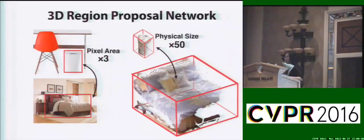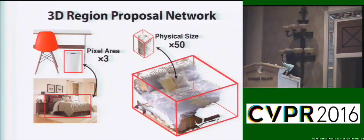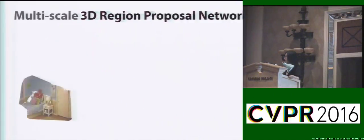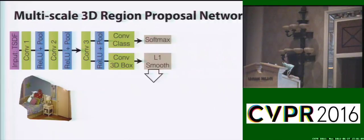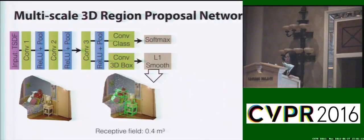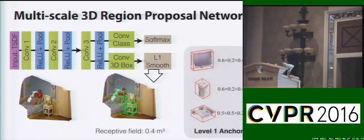Unlike 2D, 3D proposals have large variance across different object categories. For example, the pixel area of a garbage bin and a bed may appear at a similar scale in the image domain, but they are at least 50 times different in physical size. To address this challenge, we propose a multi-scale 3D region-proposal network. Our network first produces objectness scores with a receptive field equal to 0.4 meters, used mainly for small objects such as TV, garbage bin, and sink.